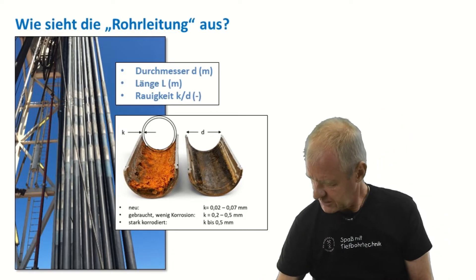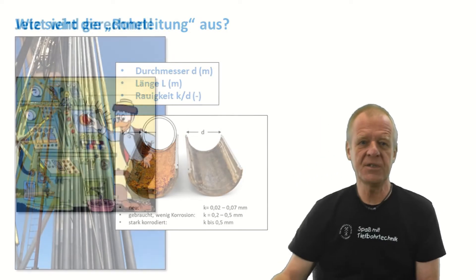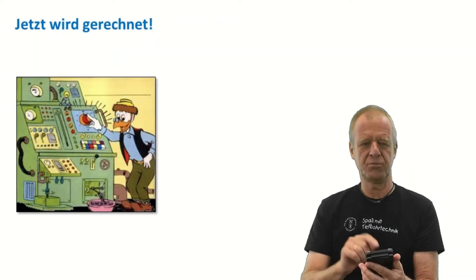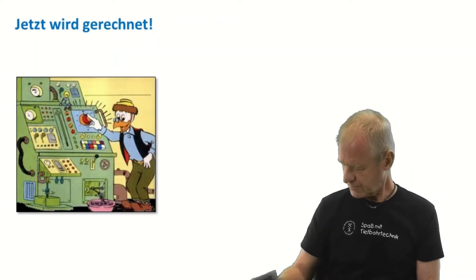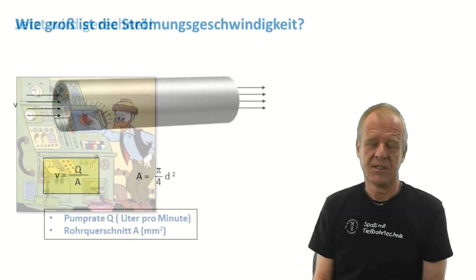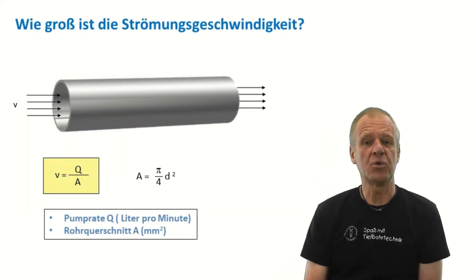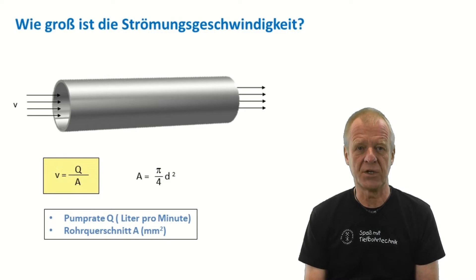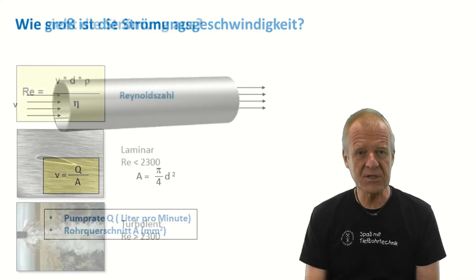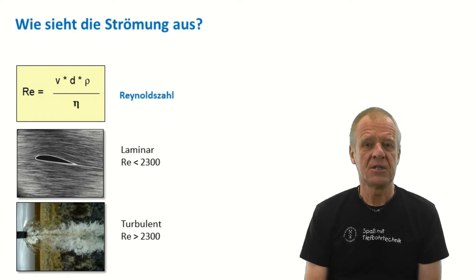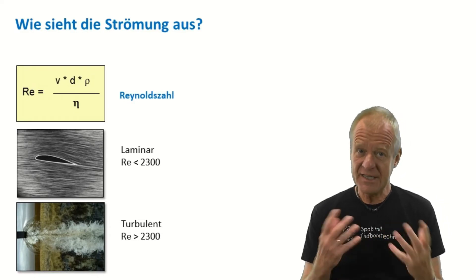If we have all these operating conditions for the job, we take out our calculator and start the calculations. First, we need to calculate the average flow velocity through the pipe. Knowing the average flow velocity, we can use the next formula to calculate the Reynolds number of our flow.